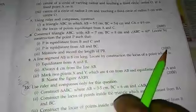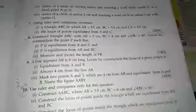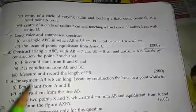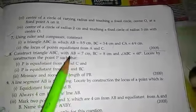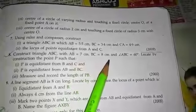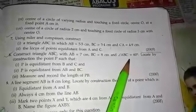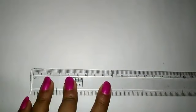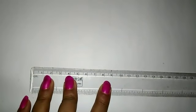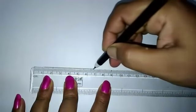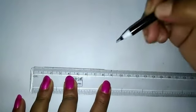First, we have to construct a triangle ABC where AB is 7 cm, BC is 8 cm, and angle ABC is 60 degrees. So let's start. This is the base of the triangle, which is 8 centimeters.